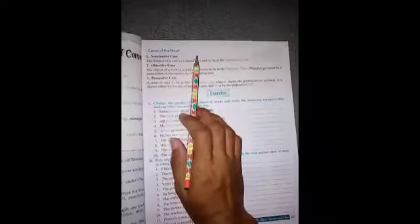Then, cases of the noun. Now we have three cases: nominative case, objective case, and possessive case. The first one is nominative case. The subject of a verb in a sentence is said to be in the nominative case. Subject of a verb in a sentence, ek sentence mein verb ka subject hi nominative case kehlata hai.